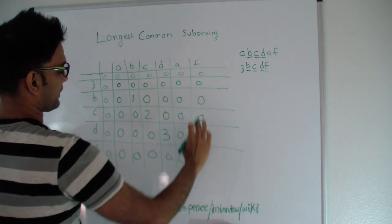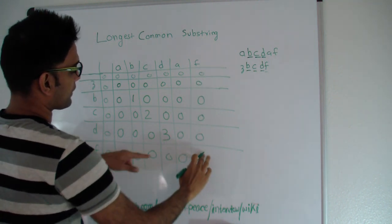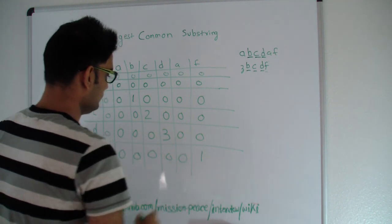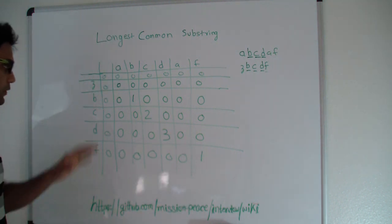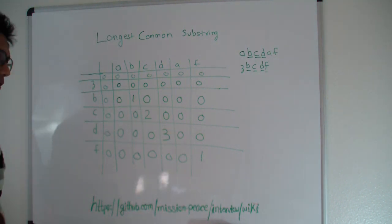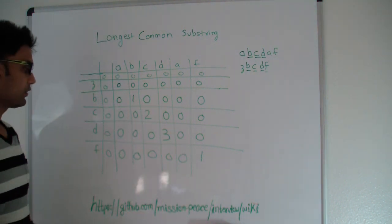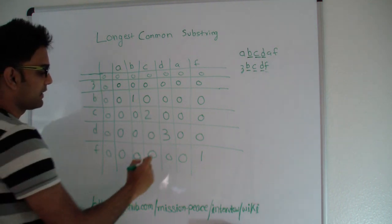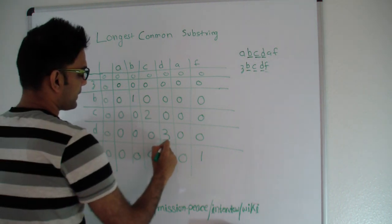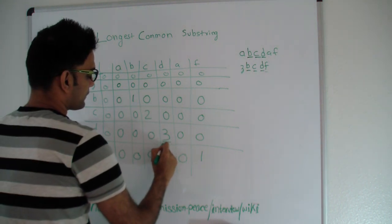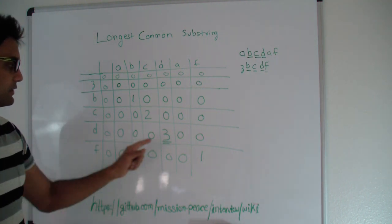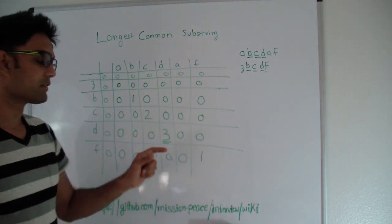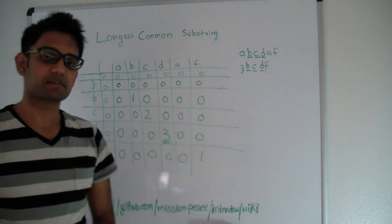F and F are the same, so the longest common substring will be 0 plus 1, which is 1. Once this matrix is built, all you have to do is iterate through the matrix again and look for the biggest number. That number is 3, which gives us the length of the longest common substring.